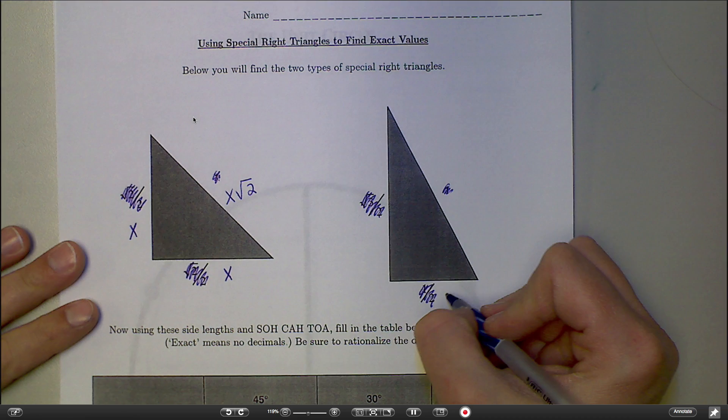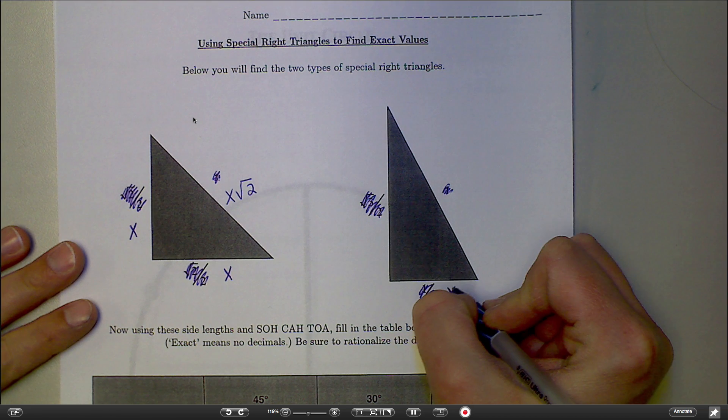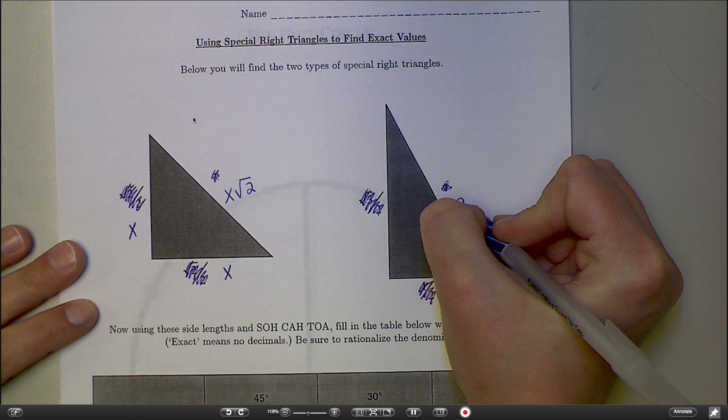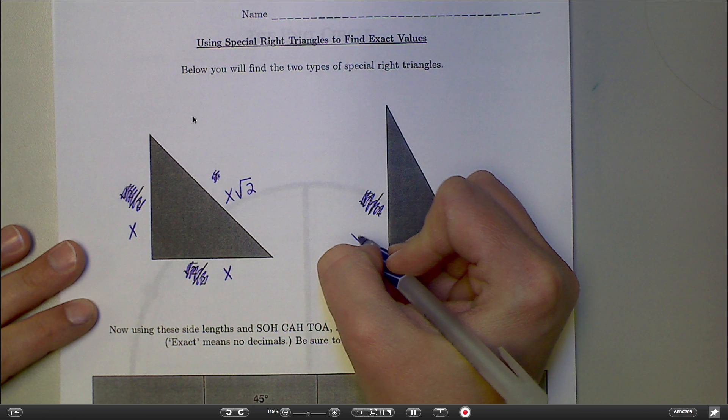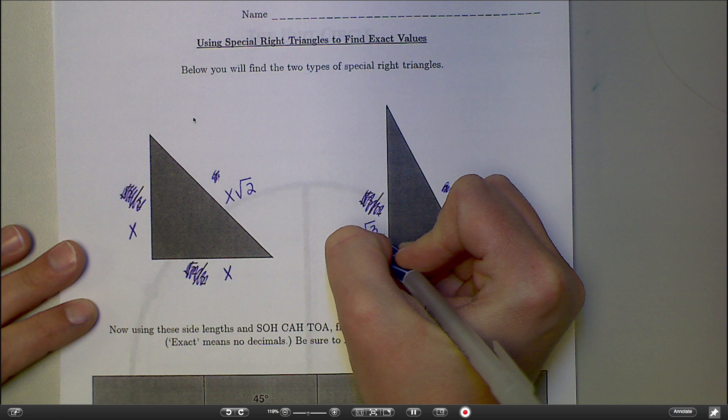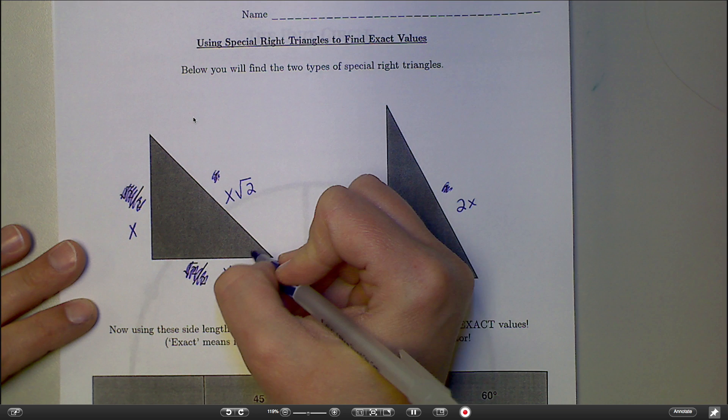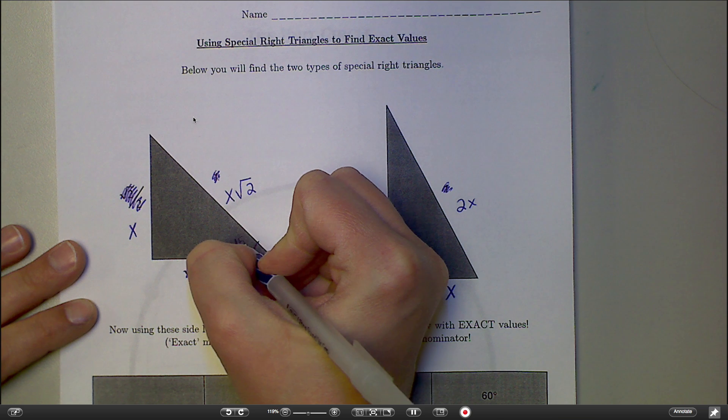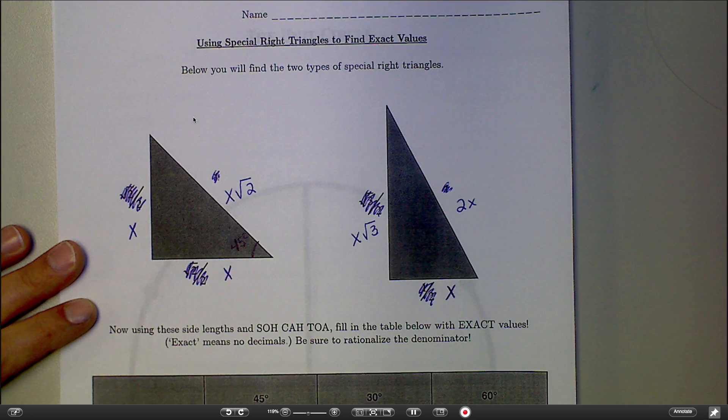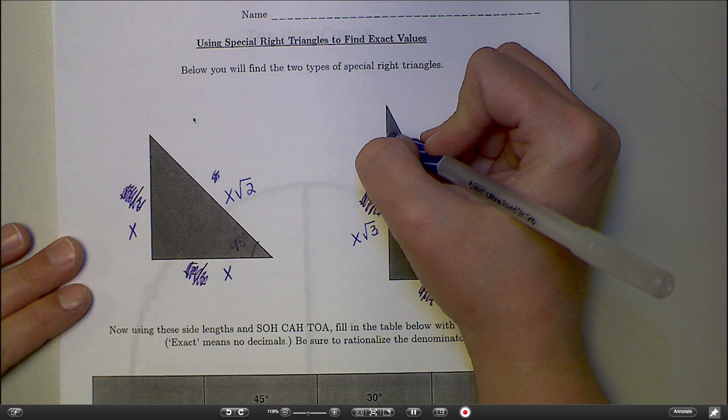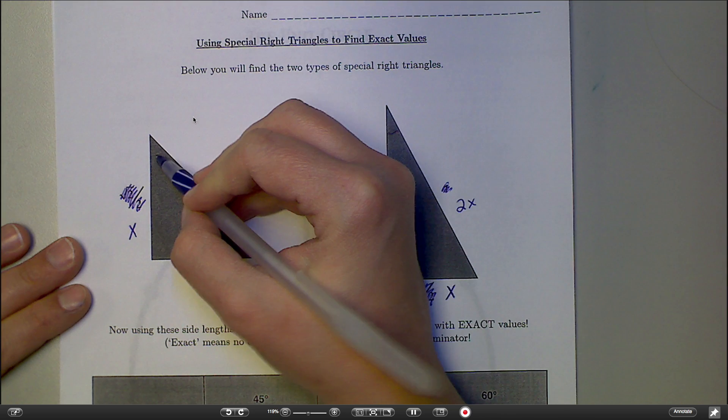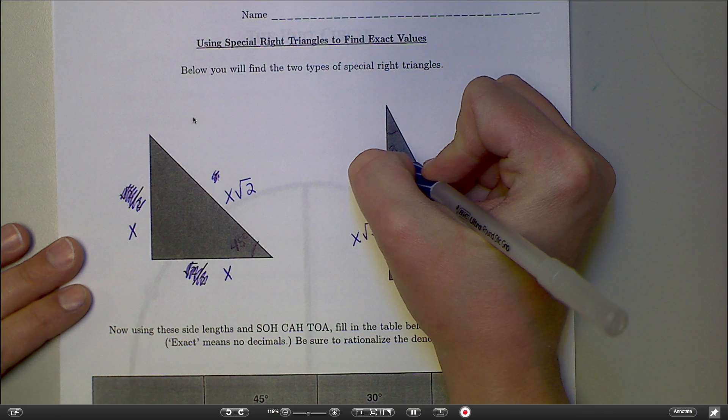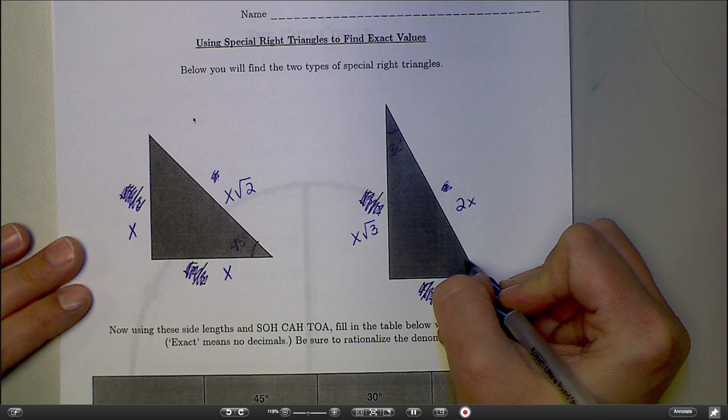And then on the 30-60-90, the short leg is X, the hypotenuse is 2X, and the longer leg is X square root of 3. Make sure you know that this is a 45-degree angle - this would also be 45 by the way - and that this is 30 degrees and this is 60 degrees.